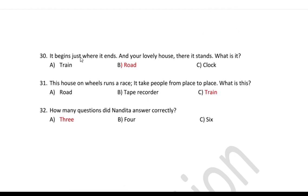Another riddle: It begins just where it ends. The house on wheels runs a race — it takes people from place to place. The answer is a train.